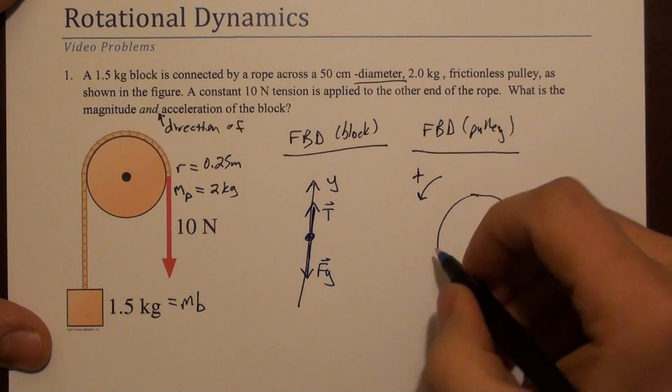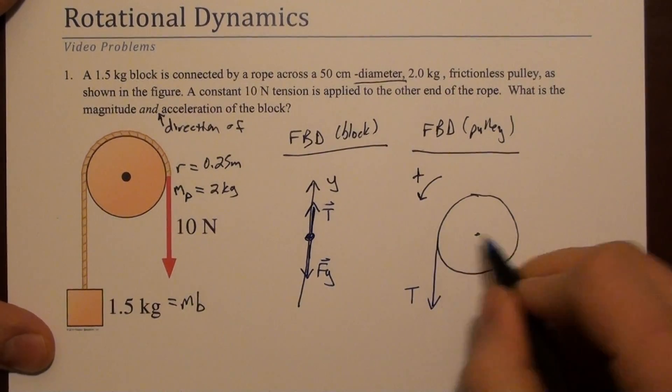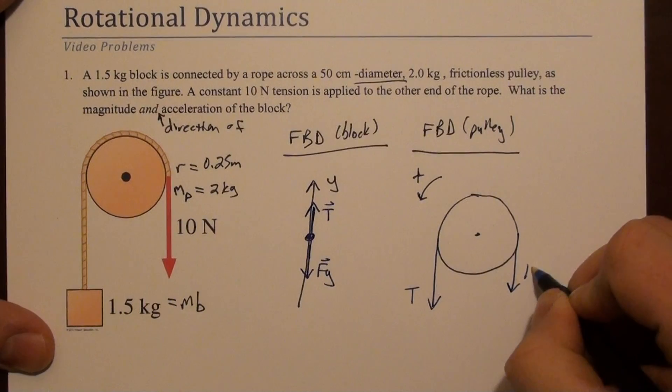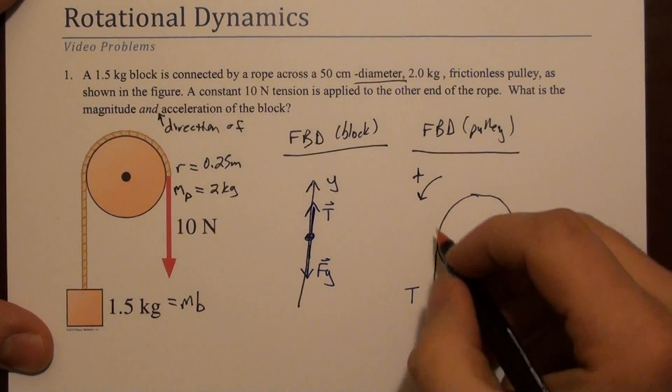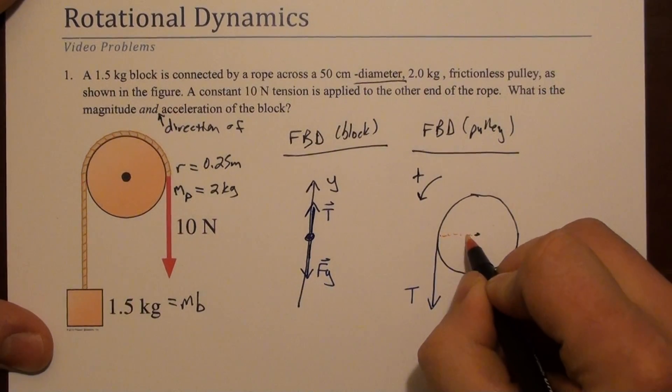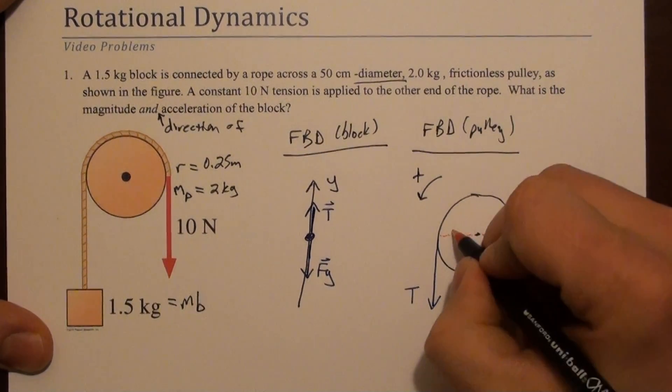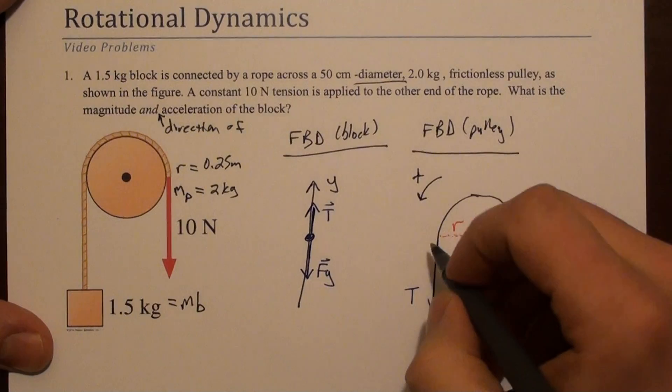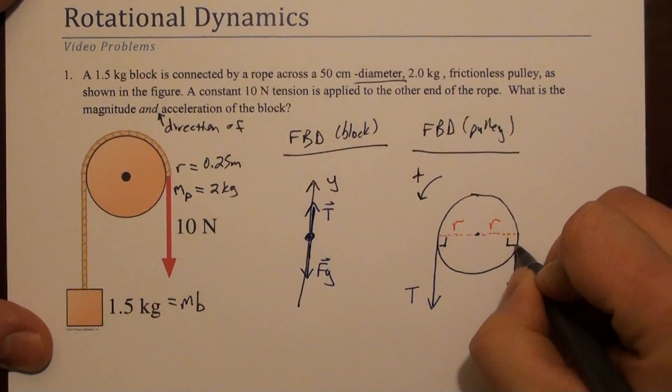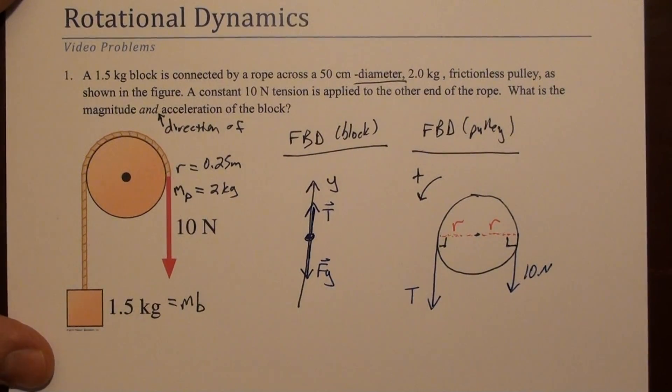We'll label these two forces. We have tension acting right here. And we have a 10 newton force acting right here. And those are each acting tangentially at the surface. So that means the distance here is the radius that we identified over here. And it's important to note that those are at a right angle. So those are going to be convenient. So before we move on,